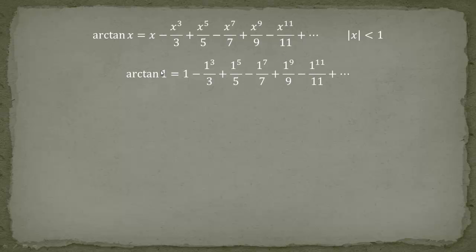We get arctan of 1 equals 1 - 1³/3 + 1⁵/5 - 1⁷/7 and so forth, so an alternating sum. Let's just have a look at what this is. This series actually goes back to Madhava.